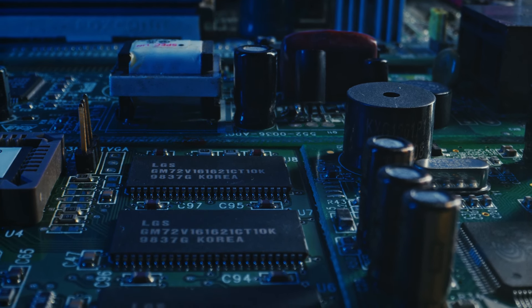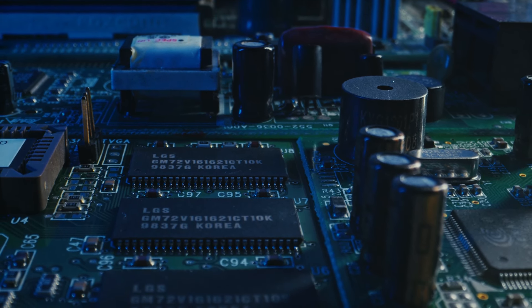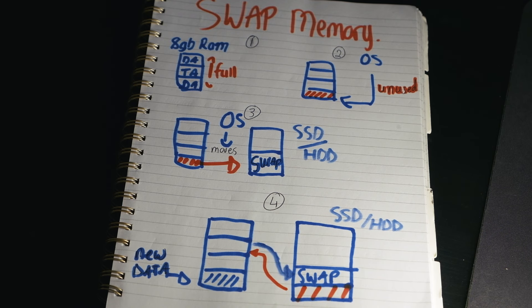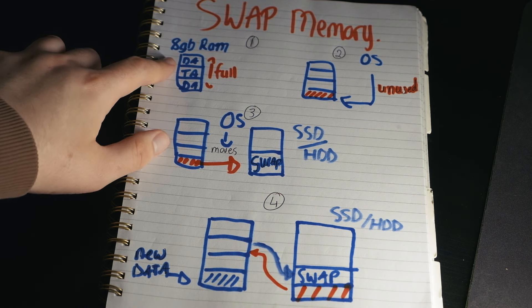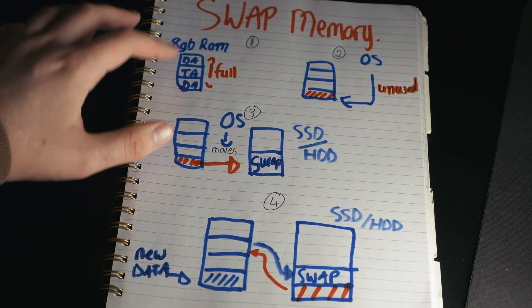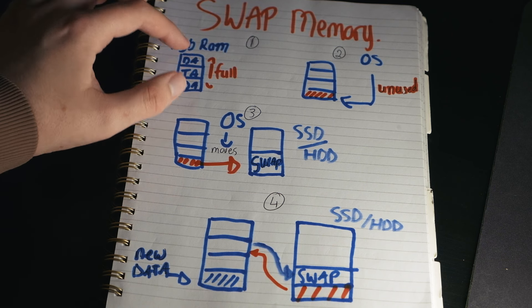However there are some drawbacks, and this is what will help us decide on the model we need. The biggest of which is swap memory. To explain what swap memory is, I've drawn out these four stages of how it works and why you need to know about it, especially when choosing a base model MacBook. So in step one, you've got 8GB of RAM and it's now full with a load of data — this is where swap memory comes in.